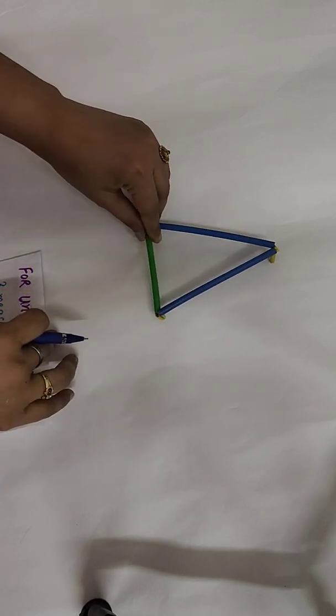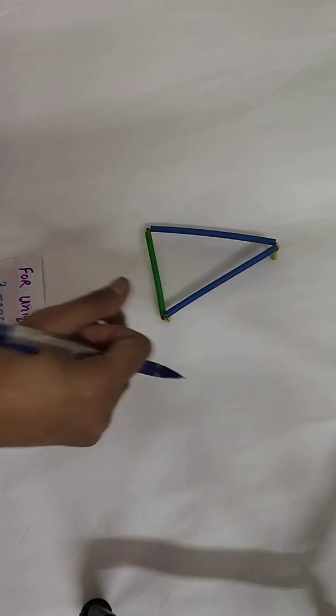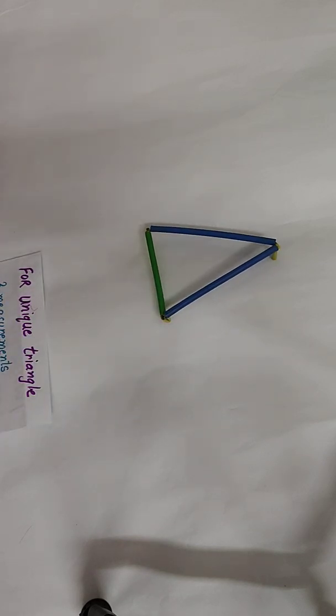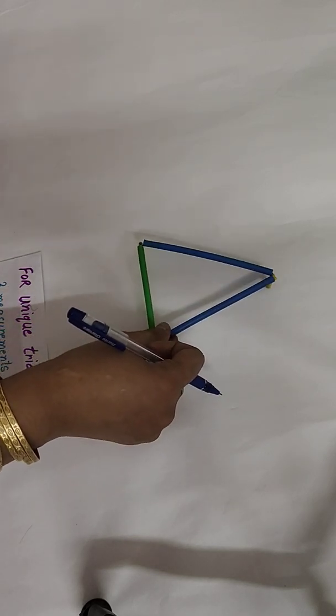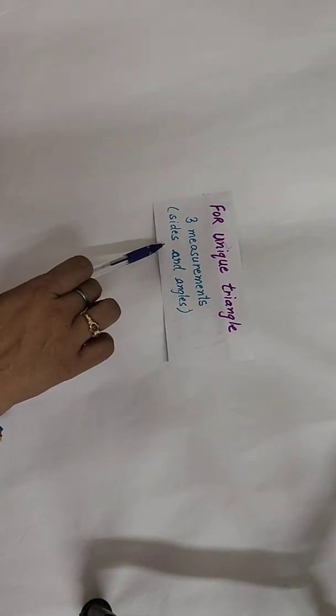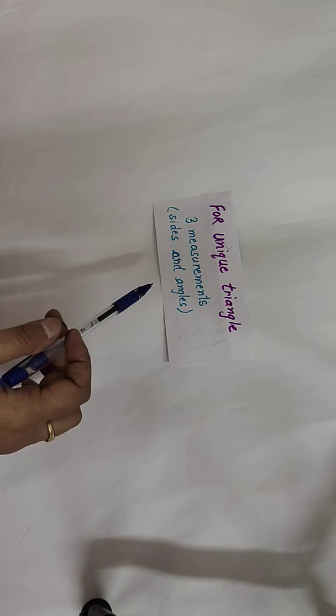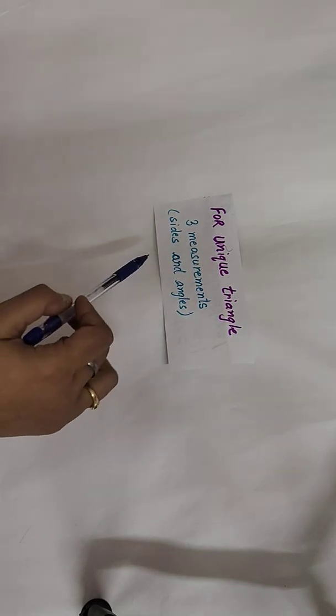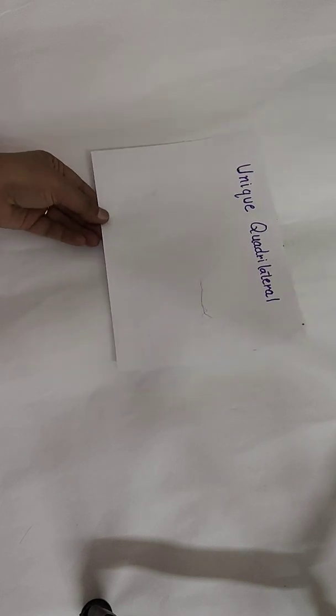My dear students, you have already learned in class 7 how to draw a triangle. To make a unique triangle you need three measurements — either sides, or sides and angles. So with three measurements you can draw a unique triangle. Now a question arises: what should we do for a unique quadrilateral?